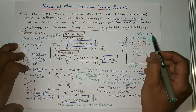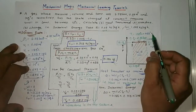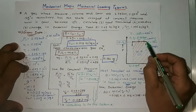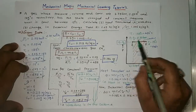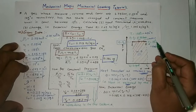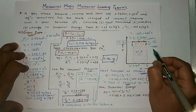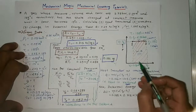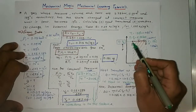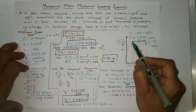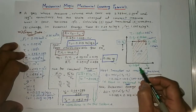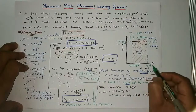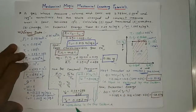For point 2, the pressure remains constant and the temperature T2 is 15 degrees centigrade, which is 288 Kelvin. The volume at point 1, V1, is equal to 0.09 meter cube, and V2 is unknown and needs to be found.